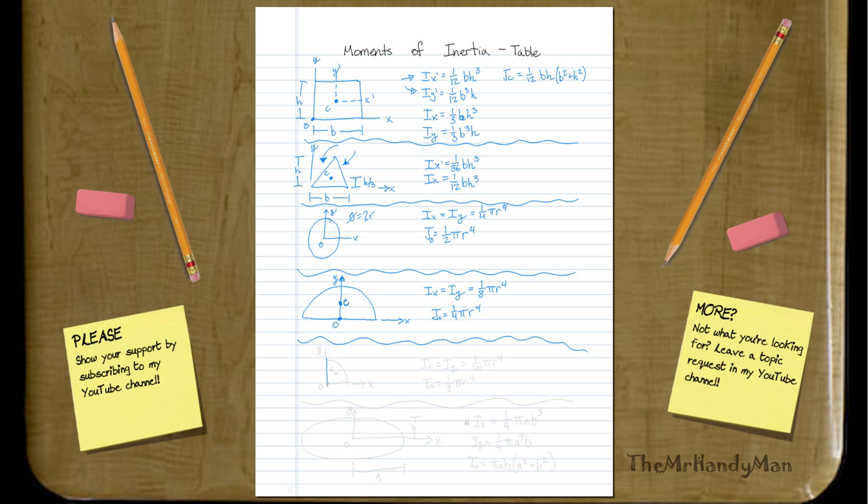And I mean, just to kind of drive that concept home, if we were to look at even something as simple as a quarter circle, you guessed it. It would be almost exactly the same. It would be one-sixteenth pi r to the fourth. And J O would be one-eighth pi r to the fourth. So nothing too extreme with those. Let's hit up ellipses real quick.